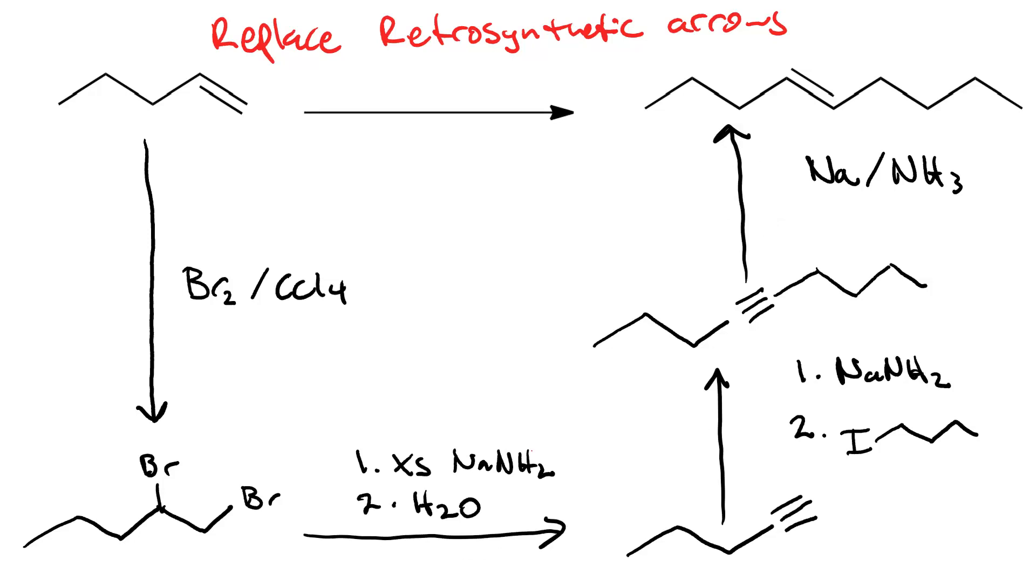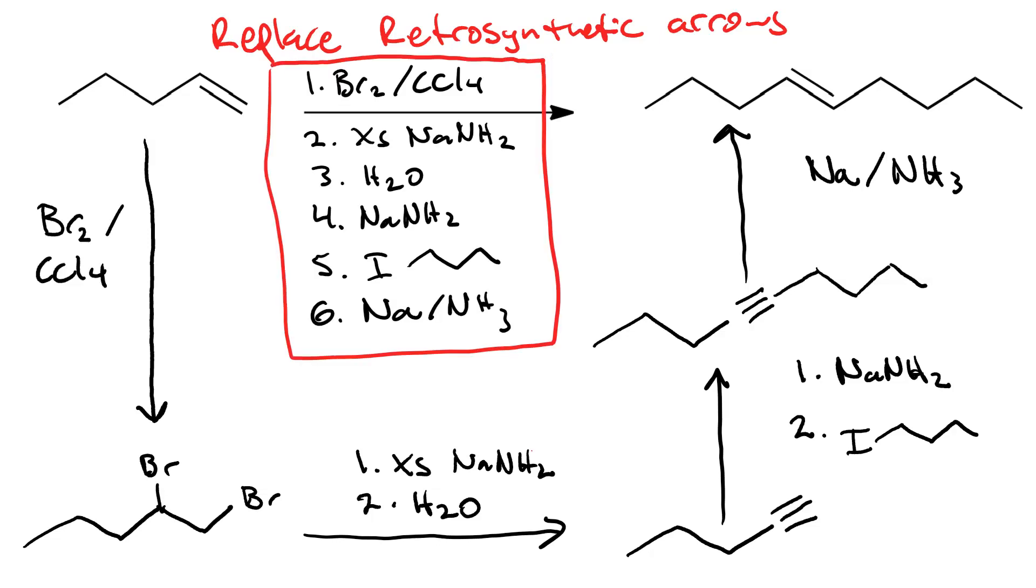Replace the retrosynthetic arrows with regular arrows and you've got the reaction in the forward direction. So that's what it looks like in the forward direction with all intermediates shown. And if you wanted to write out the synthesis shorthand, you would just do the following.